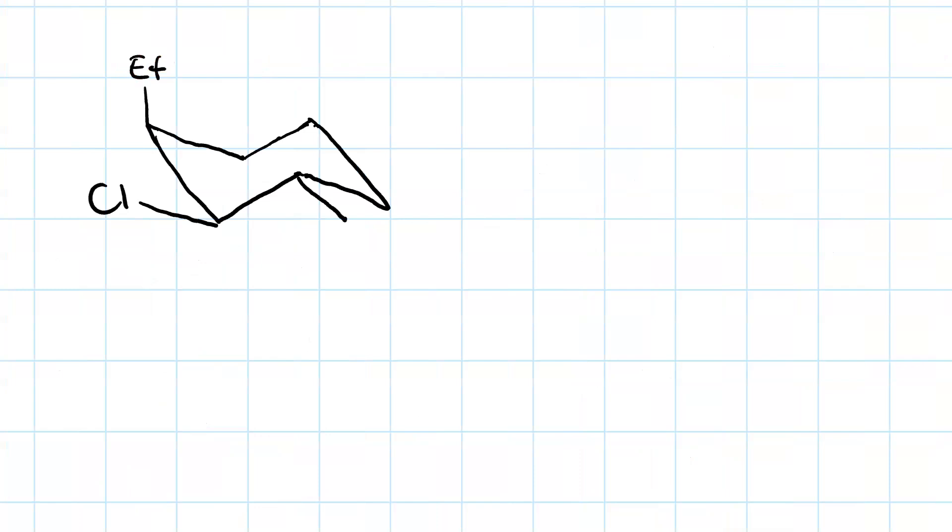So why is it necessary to do a ring flip? Well, let's look at our beta protons. Here's one. And here's one. Right now, they both have 60-degree torsion angles from our leaving group, the chlorine.